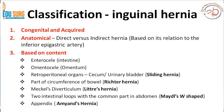Based on content, hernia can be an enterocele which contains intestine, an omentocele which contains omentum, or it can contain retroperitoneal organs such as cecum, urinary bladder, or sigmoid colon — this is known as a sliding hernia. Part of the circumference of the bowel in the sac is Richter's hernia, and these patients present with diarrhea. Meckel's diverticulum as the content of the hernia sac is named Littre's hernia.